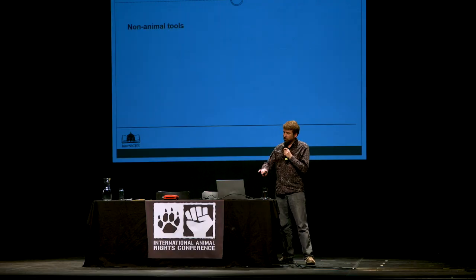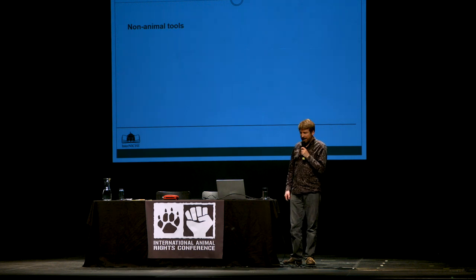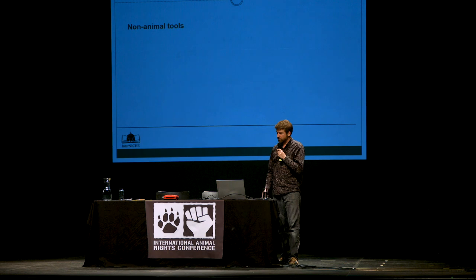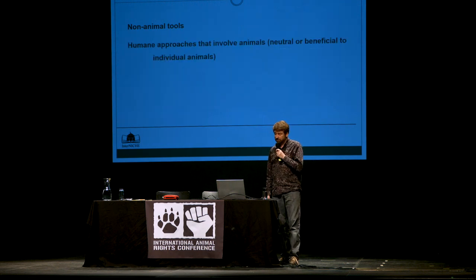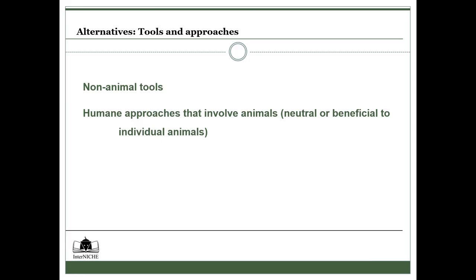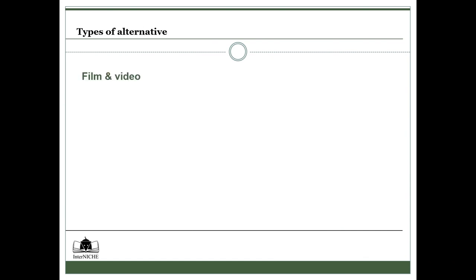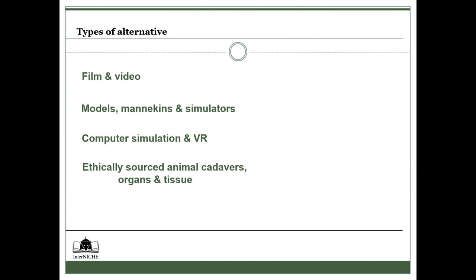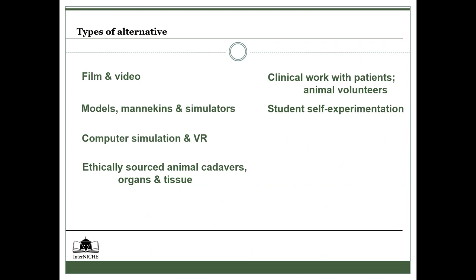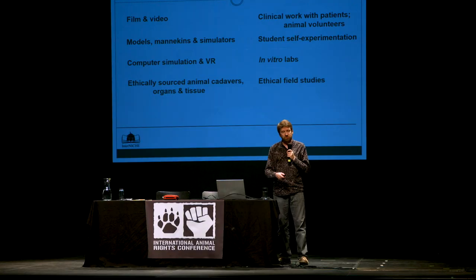So what are the different tools and approaches? We've got non-animal tools, and then humane approaches that can actually help individual animals. There's film and video; models, mannequins, and simulators; computer simulation and virtual reality; what we call ethically sourced animal cadavers and tissue; clinical work with animal patients and animal volunteers; student self-experimentation; in vitro labs — meaning in a test tube or Petri dish; and ethical field studies. Sometimes individual alternatives can do the job of replacement; other times, a combination might be suitable.